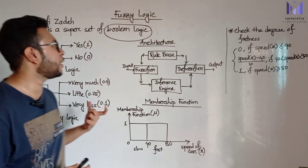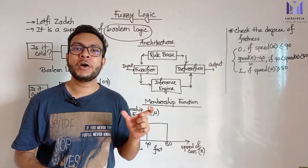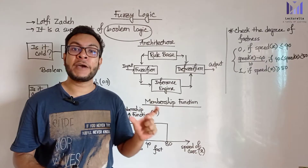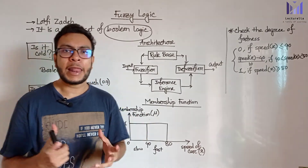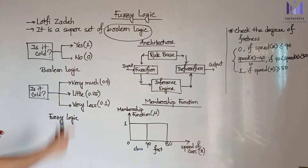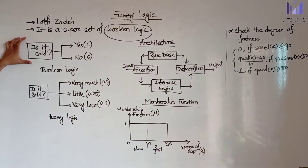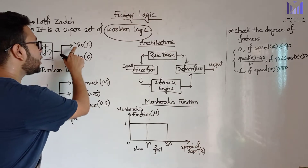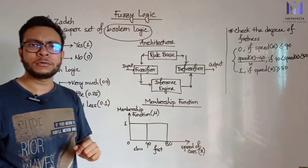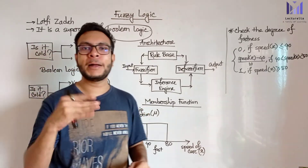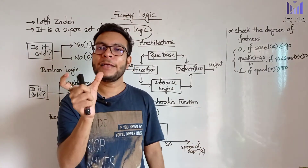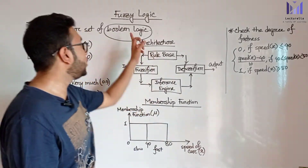Fuzzy logic is a superset where we can represent values between zero and one - the degree of something. For example, if we ask in Boolean logic: 'Is it cold?' - the answer can only be yes (one) or no (zero). Cold or not cold - only these two values can be represented in Boolean logic.